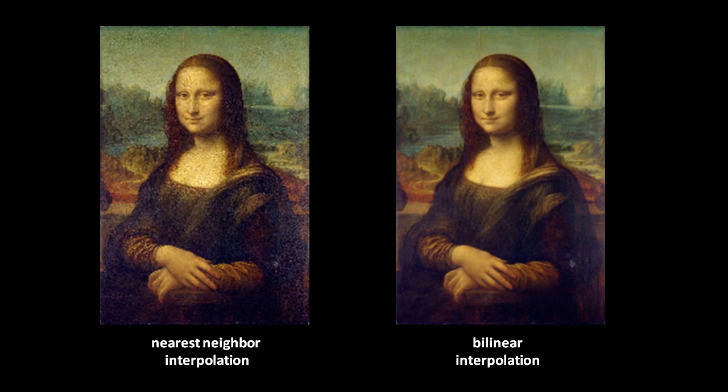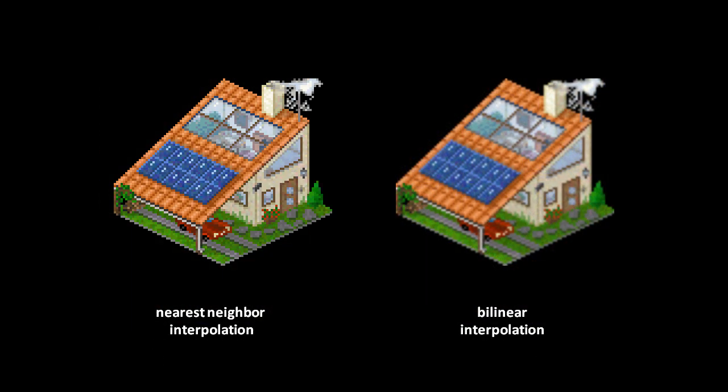Here we see the result of the same original large image shrunken down to a quarter size, but using different algorithms. On the left, we used nearest-neighbor interpolation, but on the right we used bilinear interpolation. The bilinear technique avoids the pixelation of nearest-neighbor and so is preferred in almost all circumstances. The one exception is with pixel art. Here we see the same small pixel image doubled in size, using again nearest-neighbor on the left and bilinear on the right. Whereas bilinear interpolation effectively blurs the image, nearest-neighbor preserves the hard-edged pixely look of the smaller original.